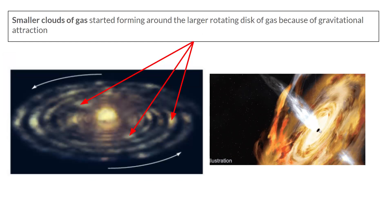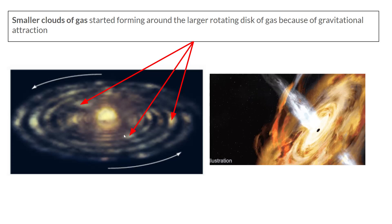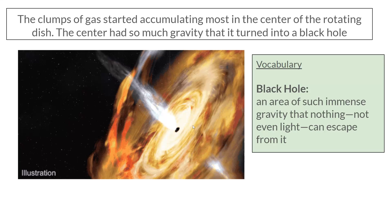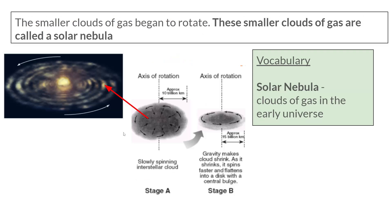So after that, we have this black hole in the center sucking everything in, including light. We still have more gases surrounding or rotating around this disk of cloud and gas. Within this disk, smaller clumps of gas started forming, because gravity is starting to act on those small masses too and everything is starting to clump together. Those smaller clouds of gas around this black hole are called the solar nebula — the cloud of gas in the early universe that led to the formation of the solar system.